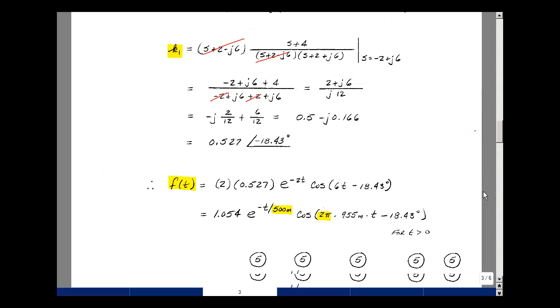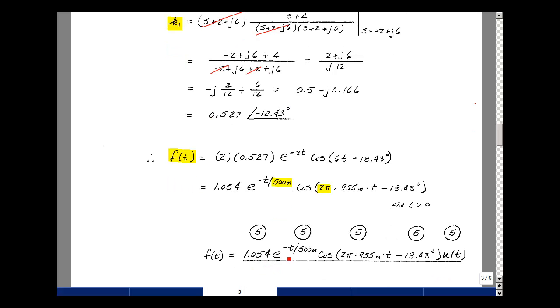And then e is raised to the real part, which is minus 2 times T, and then the cosine is the imaginary part, which is 6 times T, and then the angle of minus 18.43. In ECE 201, we use the format of a time constant. We'll take the reciprocal of 2 and write this as 1 over a half, and that would be 0.5 or 500 milliseconds. Let's also pull out a 2π from the 6, as I have 2π times 0.955 or 955 millihertz. 1.054 times e^(-T/500 ms) times the cosine of 2π, 955 mHz times T, and the angle of minus 18.43, and then times U(T), because this is valid for T greater than 0. This is worth 25 points, and I give 5 points for the magnitude, 5 points for the time constant, 5 points for the frequency, 5 points for the angle, and then 5 points for having U(T).